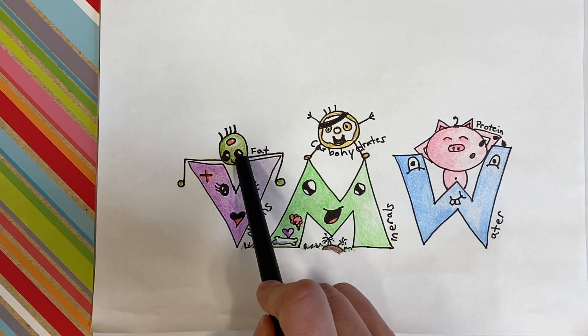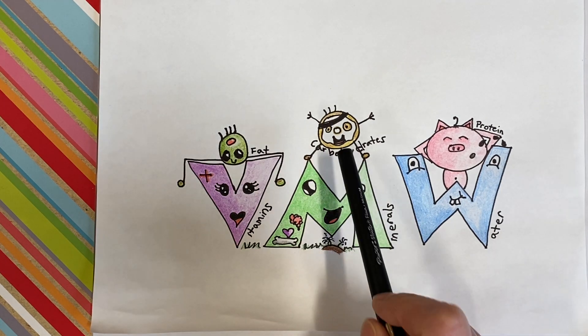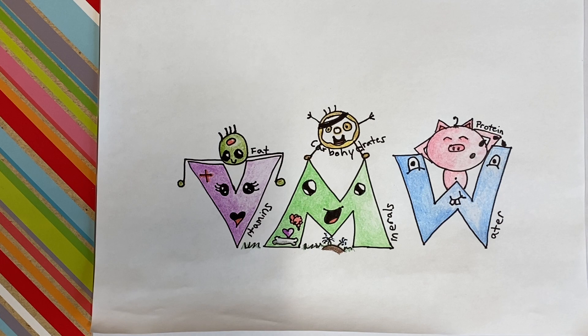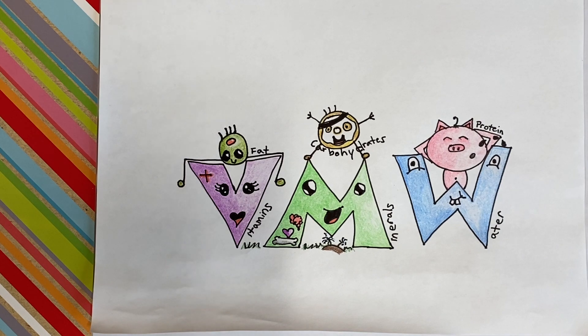And we have fat, that protects the cells in the body. Carbohydrates, gives body energy and fuel the body needs. And protein, that builds and repairs muscles and organs. And together, these are the six essential nutrients.